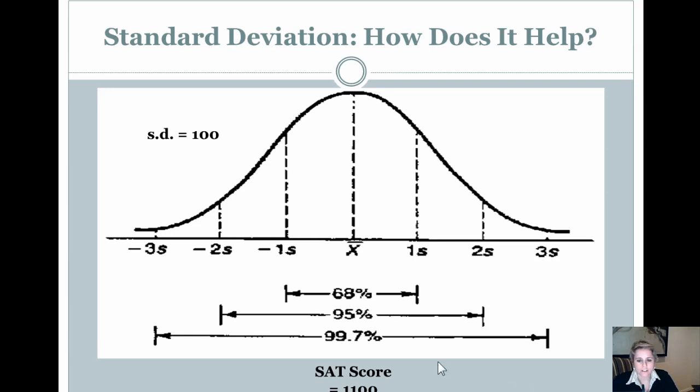Now, as one example, let's look at SAT scores. I don't really know what the true average SAT score is now, but let's say for the sake of it, that out of 1600, it's 1100. So the mean, x bar, is 1100. The standard deviation, s.d., equals, say, 100.